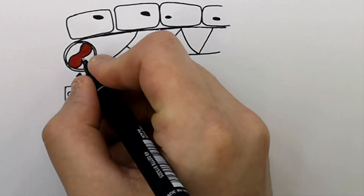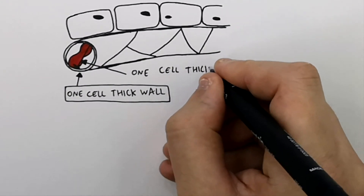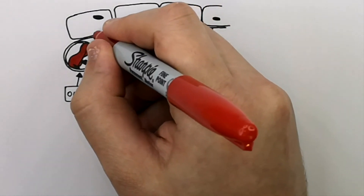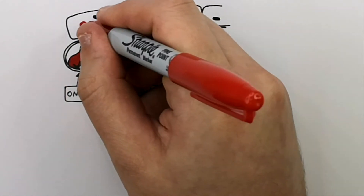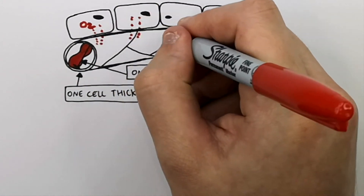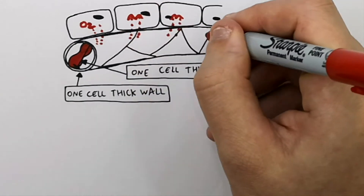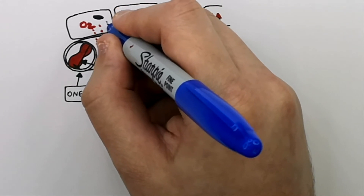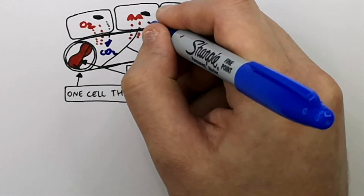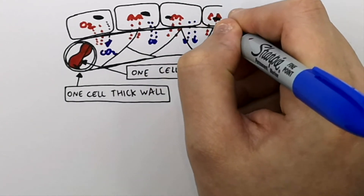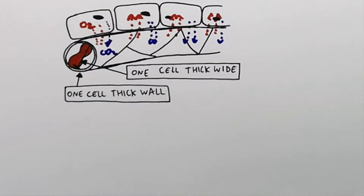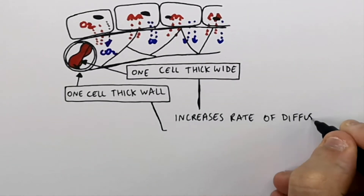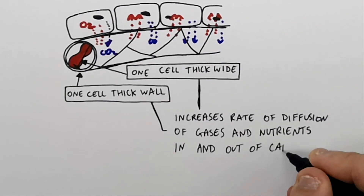Capillaries are one blood cell wide. What I'm showing here is oxygen diffusing through the one cell thick wall of the capillary to the respiring cells. The capillaries supply oxygen and nutrients such as glucose to respiring cells. Carbon dioxide diffuses from the respiring cells through the one cell thick wall of the capillary and into the capillary to be taken away. The one cell thick wall and one cell wide lumen increase the rate of diffusion of gases and nutrients in and out of the capillary.